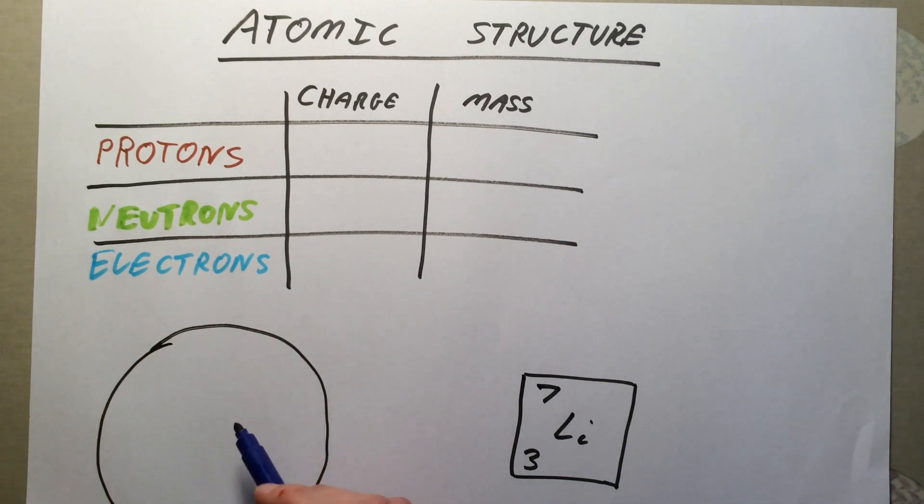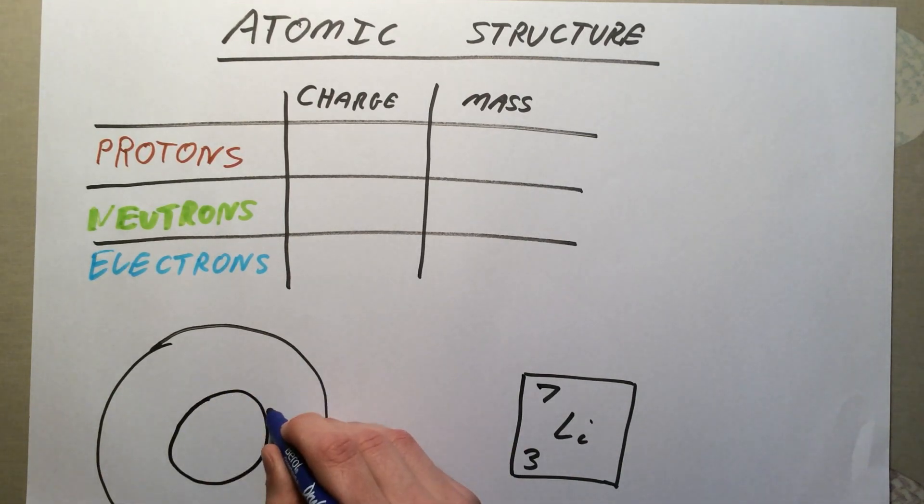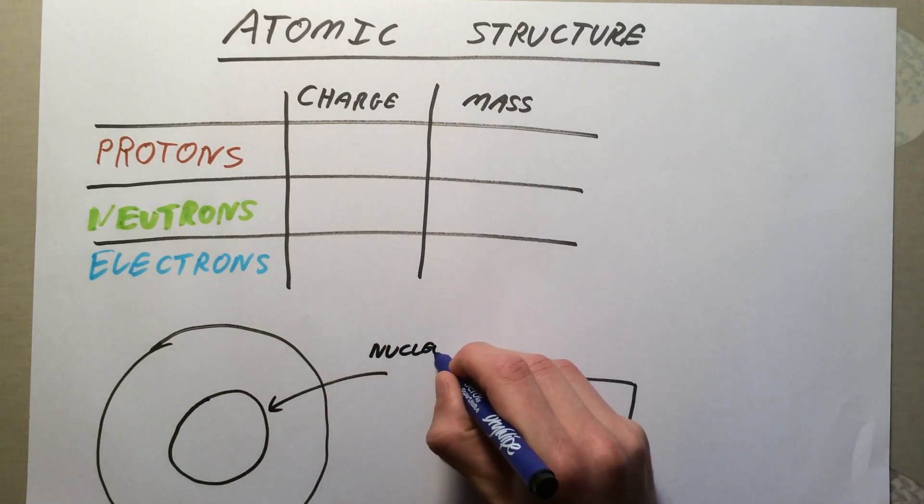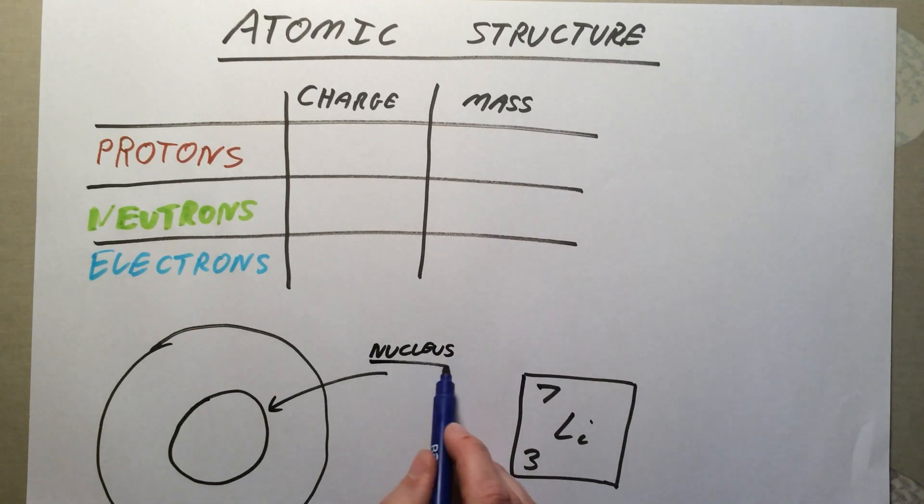However, if we zoom inside it, right in the center, absolutely tiny compared to the size of the atom but still there - I'm going to draw it a little bit larger - we have a part of the atom which we call the nucleus. Don't get this confused with the nucleus in biology. It is much, much smaller than the nucleus in biology. It just means the center of our atom.